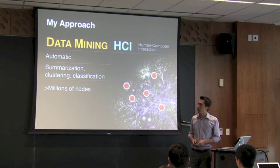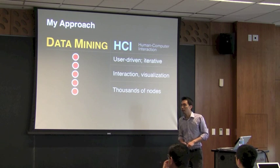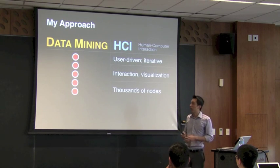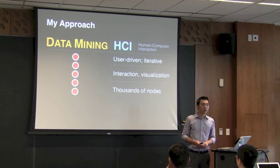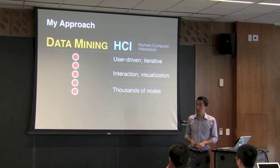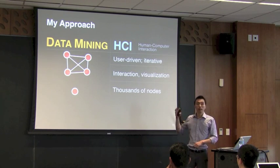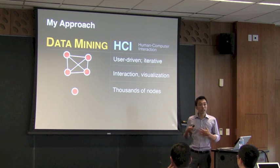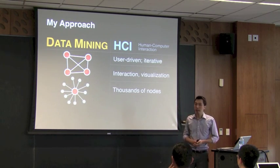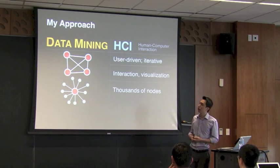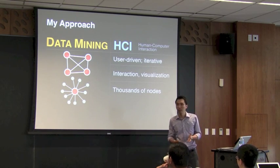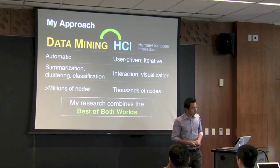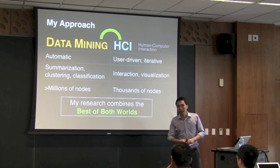So if we now apply methods from HCI — visualization or interaction — we can help people better understand what's happening. For example, visualizing connections between the first four detected nodes may reveal they form a clique, which is anomalous in many ways. Or providing interaction techniques to expand on the last node might show it's the center of a star — like a telemarketer who makes many calls but those people don't talk to each other. This is a simplified example of how data mining and HCI can work together.